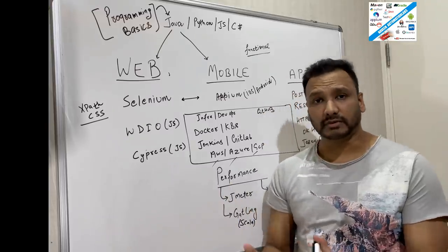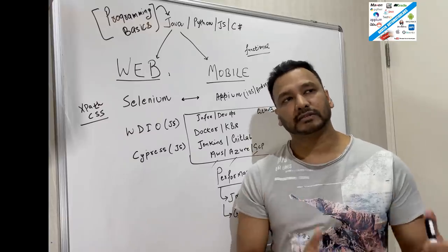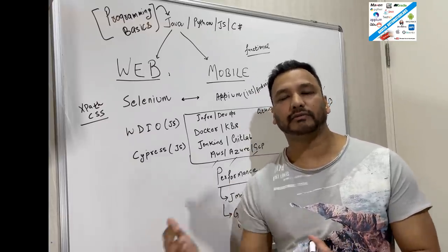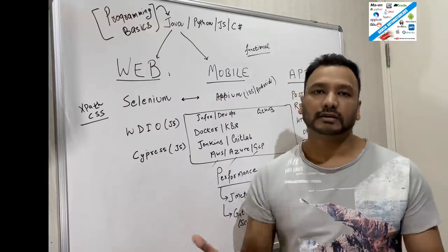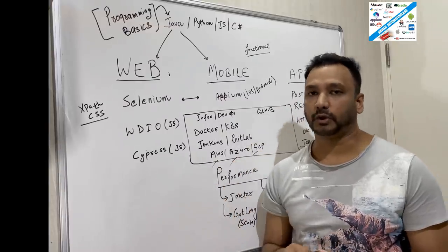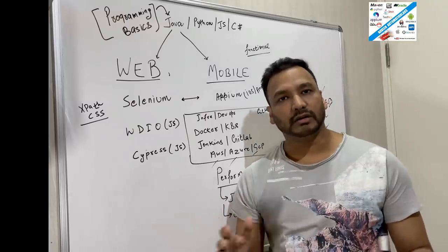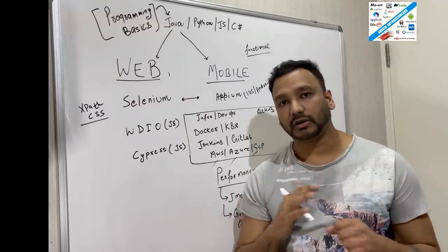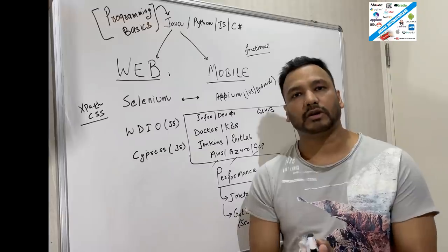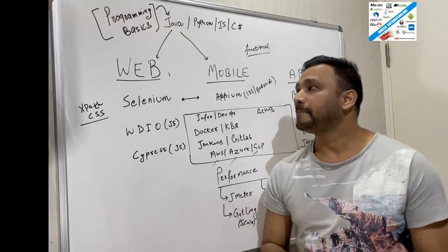For example, Selenium with Java is the best combination in the market, as compared to Selenium with Python or Selenium with JavaScript. It's totally an individual choice which language you want to pick. But I would say without programming you cannot learn automation, you cannot survive in automation, and you cannot be happy with automation if you don't know the basics of programming.